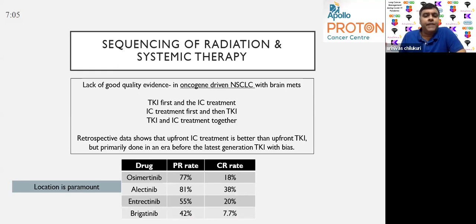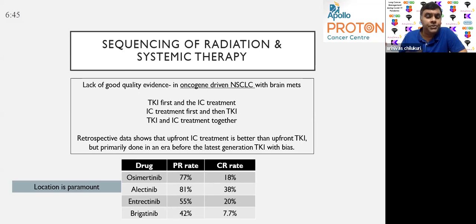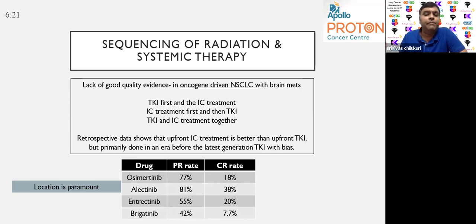Regarding the sequence of radiation and systemic therapy, there is very little good-quality evidence. There is no high-quality evidence as to whether we do TKI first or intracranial treatment first for oncogene-driven non-small cell lung cancer with brain metastasis. At least retrospective data shows that upfront intracranial treatment is better than upfront TKI, but those studies were done in an era where the latest generation TKIs were not available, so there could be significant bias.